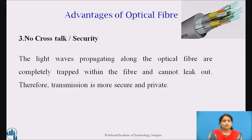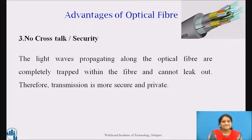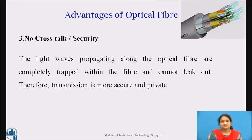The next advantage is no crosstalk and data security. The electrical signaling in a copper network generates a field of interference around the cables. When multiple cables run near one another, this interference can bleed into nearby cables, hindering the desired messaging. This is referred to as crosstalk and can force expensive retransmission or even pose security risks. On the other hand, light waves propagating along the optical fiber are completely trapped within the fiber and cannot leak out. Furthermore, light cannot couple into the fiber from the sides, so the possibility of crosstalk is minimized and transmission is more secure and private.